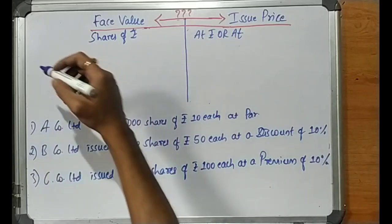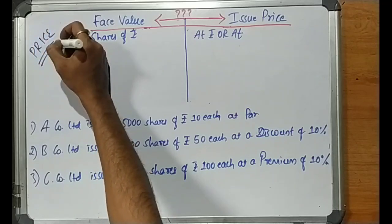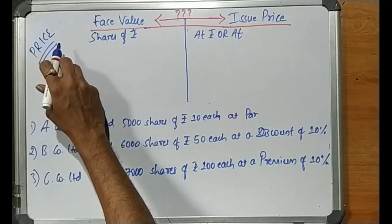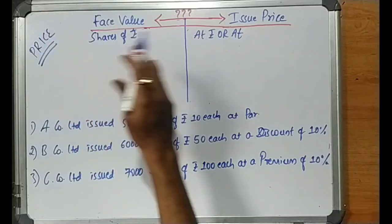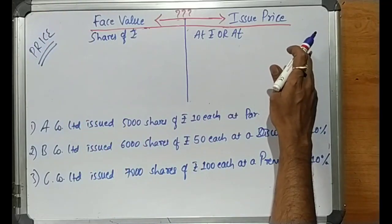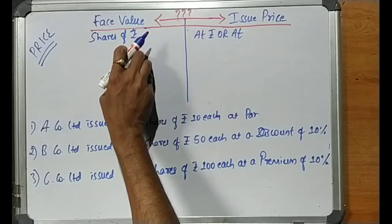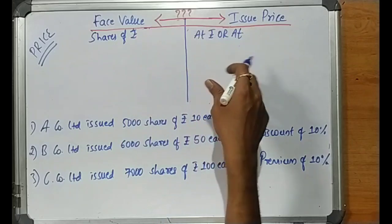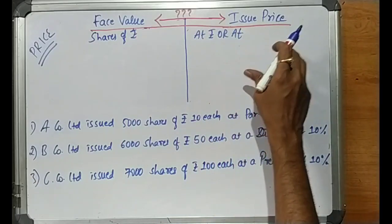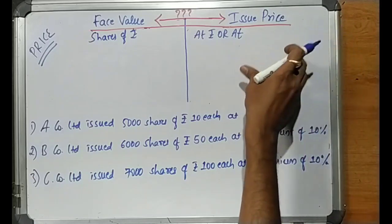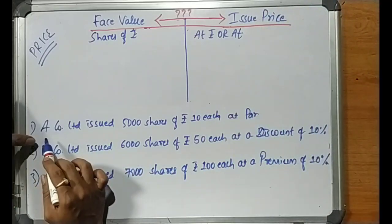When we see a price-related sentence in the problem, we need to note that sentence and split it into two parts. The first part will give us the face value, and the second part will give us the issue price. So the first part — 'shares of rupees' — is related to face value, and the next part continuing at 'rupees' or 'at' is related to issue price.